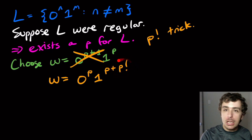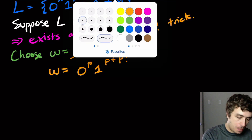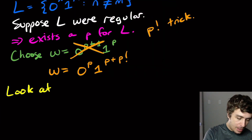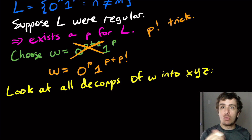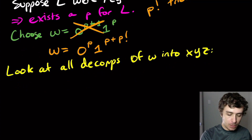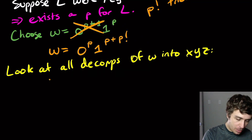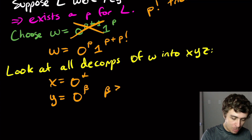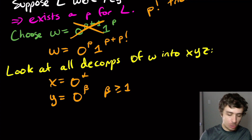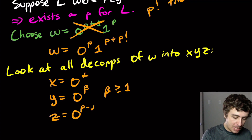We've got to look at all decompositions of w into x, y, and z according to the rules, where xy has length at most p and y has at least one character. We know the first p characters are zeros, so x and y are only zeros. So x is some number of zeros, call it alpha; y is some number of zeros, call it beta; and since y is not empty, beta is at least one. And z is the rest of the string: 0 to the p minus alpha minus beta, 1 to the p plus p factorial.